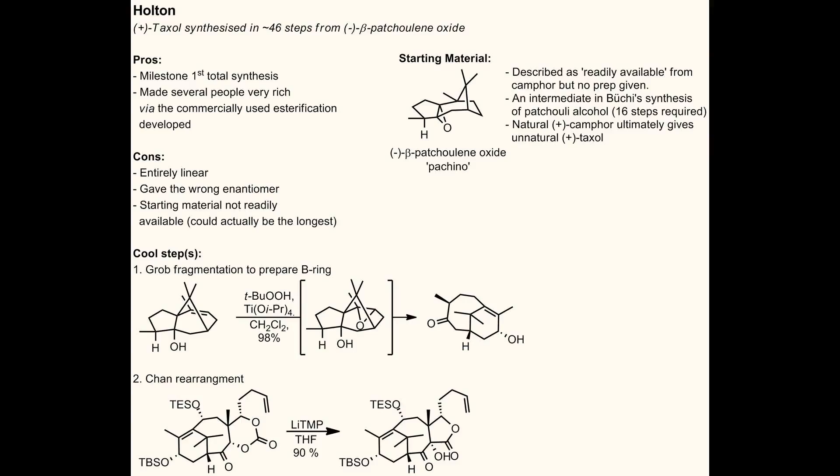TBS (tert-butyldimethylsilyl) 1: protection used tert-butyldimethylsilyl triflate, lutidine, 4-dimethylaminopyridine, and dichloromethane; deprotection used camphorsulfonic acid, dichloromethane, and methanol. The secondary hydroxyl group in 1.8 was briefly protected during the protection of a tertiary hydroxyl group in the same compound.